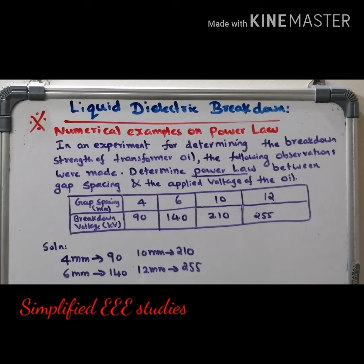Now, first and foremost, what you can do is plot a graph. The data is already provided with you. Plot a rough sketch. If you have a graph sheet, that is well and good — we can easily identify the points exactly. We can draw in a rough manner right now, but whenever you are practicing, you better draw on a graph sheet so we can figure it out very easily.